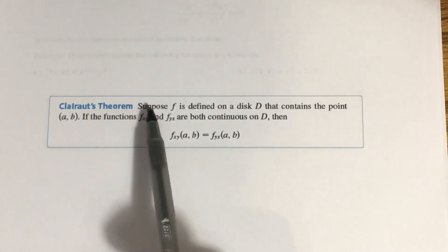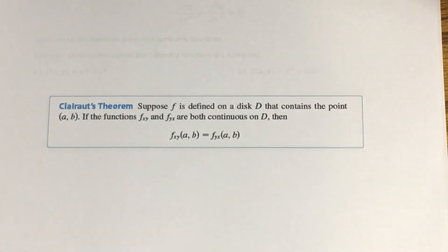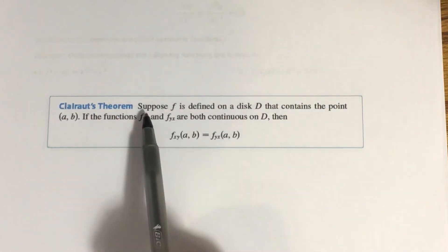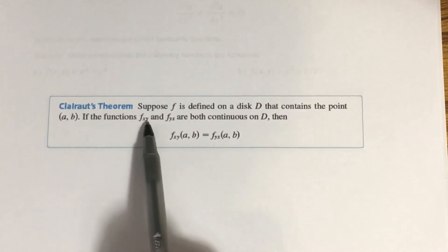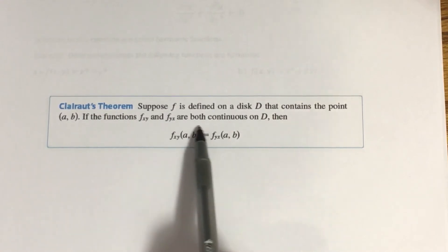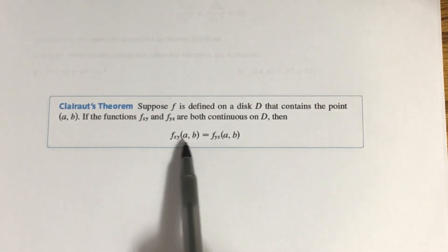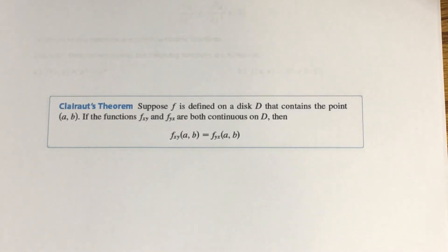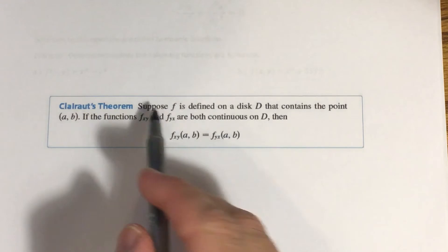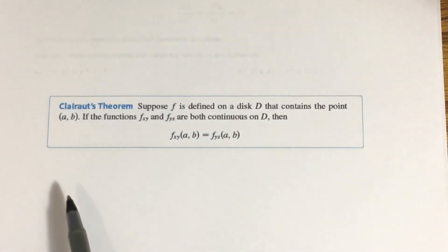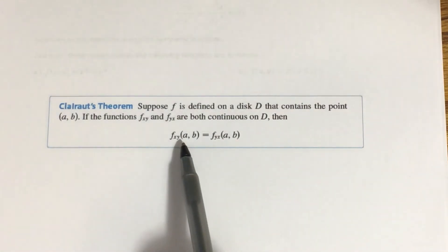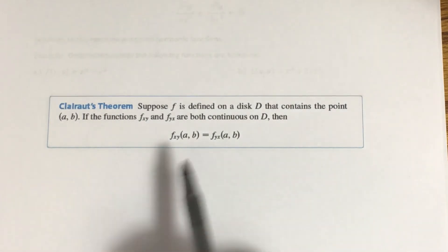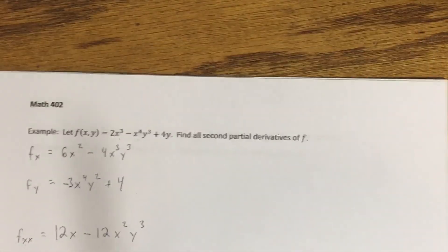This equality of mixed partials is guaranteed by Clairaut's theorem. It states: suppose f is defined on a disk D containing the point (a, b). If the mixed partials fxy and fyx are both continuous on D, then those mixed partials are equal at (a, b). The functions we deal with in this class will always satisfy that condition, so we'll just move forward assuming fxy always equals fyx.